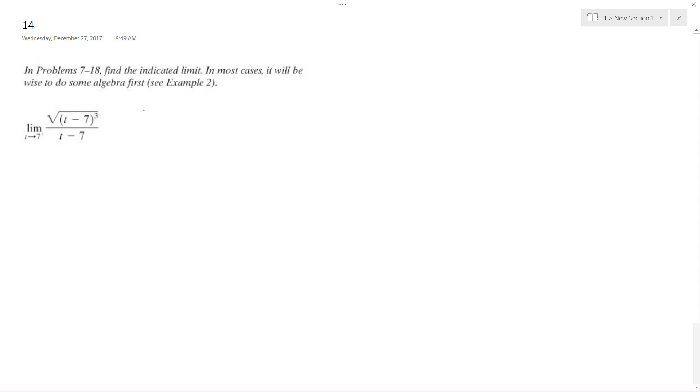So the square root is the same thing as taking something raised to the 1 half, so we can break this down into t minus 7 raised to the second, and then the radical raised to the 1 half, and then we get t minus 7 raised to the 1 half, all over t minus 7.